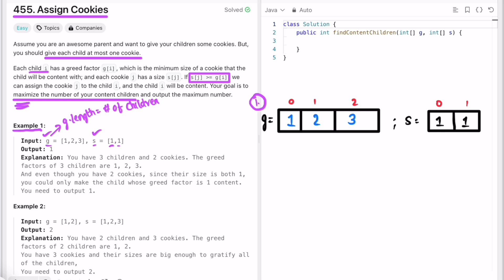The important condition we have to check is: I have to assign the least possible size of the cookie to the least greed of the child. So it is important for us to sort the array in ascending order. In this example, the array is already sorted, so one two three remains one two three. We also have to sort the cookies array, so one comma one will be sorted in ascending order.